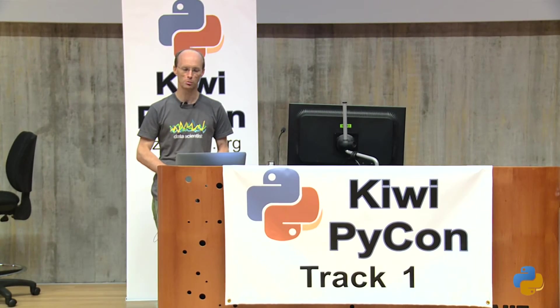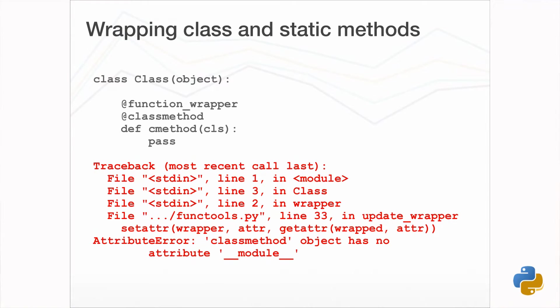Methods of classes do provide a number of potential problems. Even if you're using functools.wraps or functools.update_wrapper in your decorator, when the decorator is applied around classmethod or staticmethod, it will fail with an exception. This is because the wrappers created by these do not have some of the attributes being copied by wraps and update_wrapper. As it happens, this is actually a Python 2 bug and it's fixed in Python 3 by ignoring missing attributes.